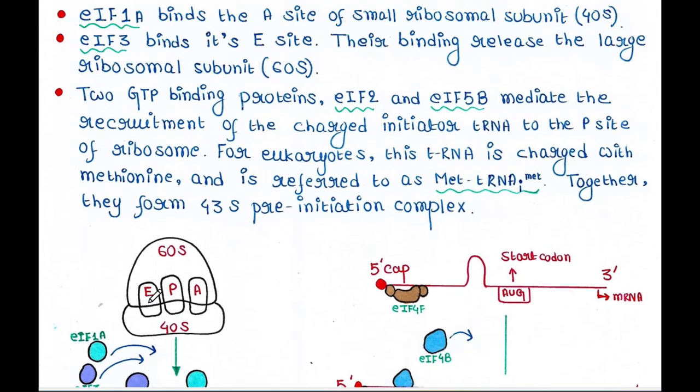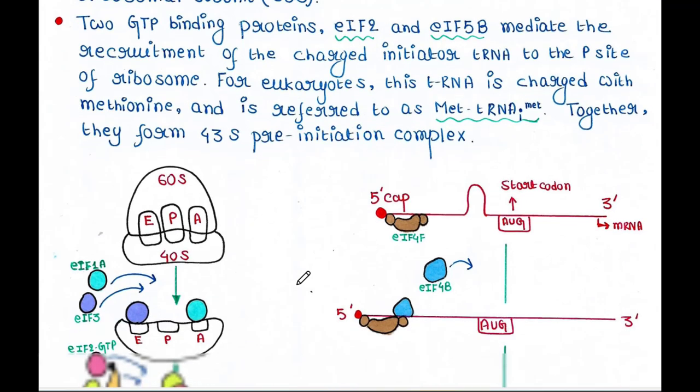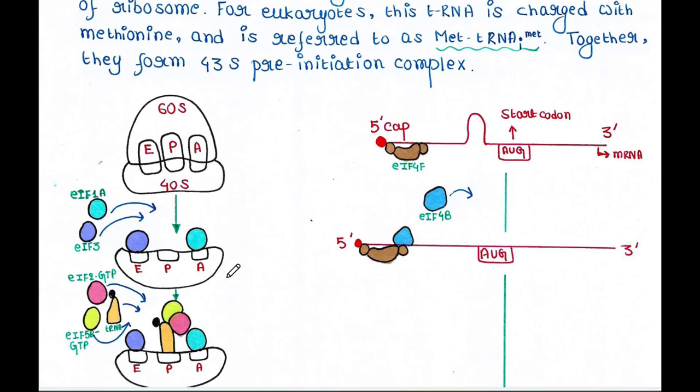Their binding releases the large ribosomal subunit, that is the 60S subunit. So here, the 60S subunit is released and only the small ribosomal subunit is there. The A site is occupied by eIF1A and the E site is occupied by eIF3. IF means initiation factor.